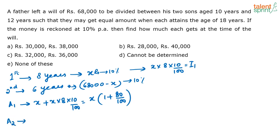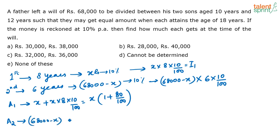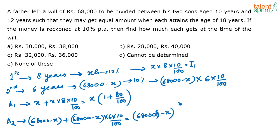For the second son, the amount 68,000 minus X is invested for only 6 years, because in 6 years he will turn 18. So the amount he will get finally is 68,000 minus X, plus 68,000 minus X into 6 into 10 by 100. Or more simply, he will get 68,000 minus X into 1 plus 60 by 100.